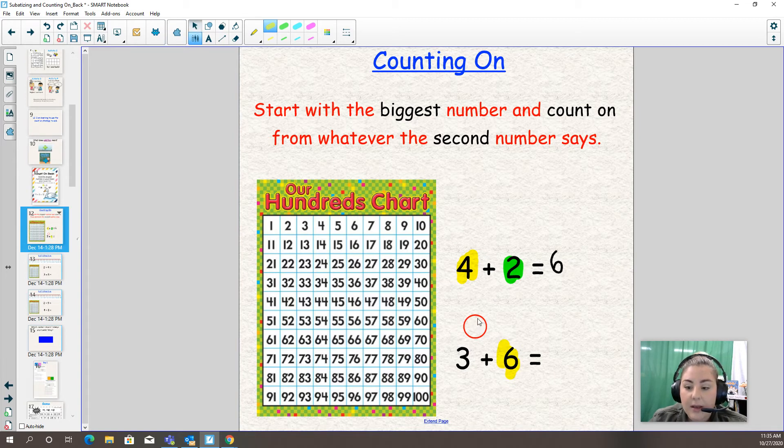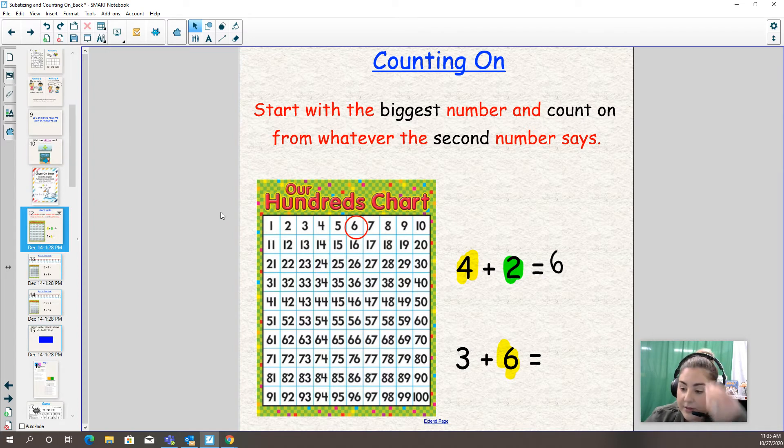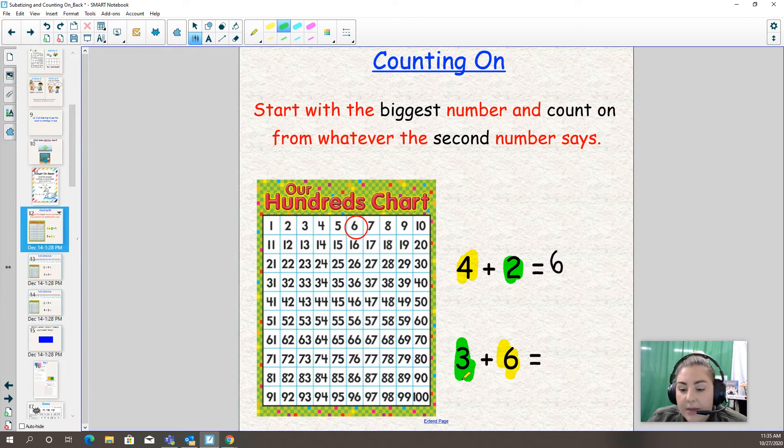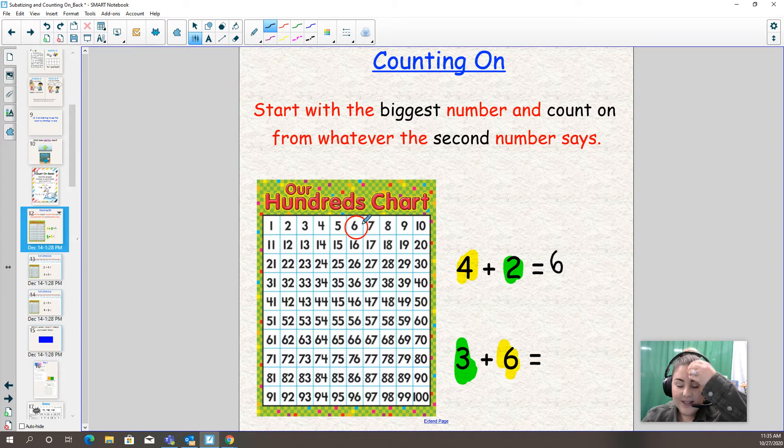I'm going to put my circle on six. And remember, if you have a hundreds chart, if you don't need that to help you, you don't need to use it. I like to just use my head and my fingers to help me. But you might need the hundreds chart, which is totally fine. We're going to count up three times. Six, seven, eight, nine. Or six, seven, eight, nine. So I counted up three times. Three plus six equals nine.